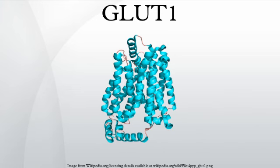GLUT1 is also a major receptor for uptake of vitamin C as well as glucose, especially in non-vitamin C producing mammals, as part of an adaptation to compensate by participating in a vitamin C recycling process. In mammals that do produce vitamin C, GLUT4 is often expressed instead of GLUT1.